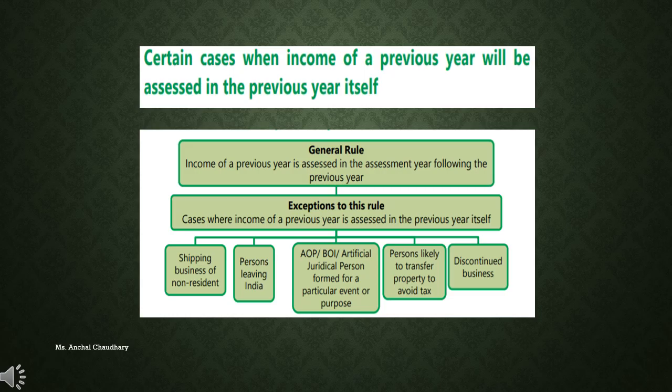Whenever you are taxing the income of a previous year, you are taxing that amount in your assessment year. But there is an exception to this rule in the following circumstances: shipping business of non-resident, persons leaving India, AOP or BOI formed for a particular event or purpose, persons likely to transfer property to avoid tax, and discontinued business.